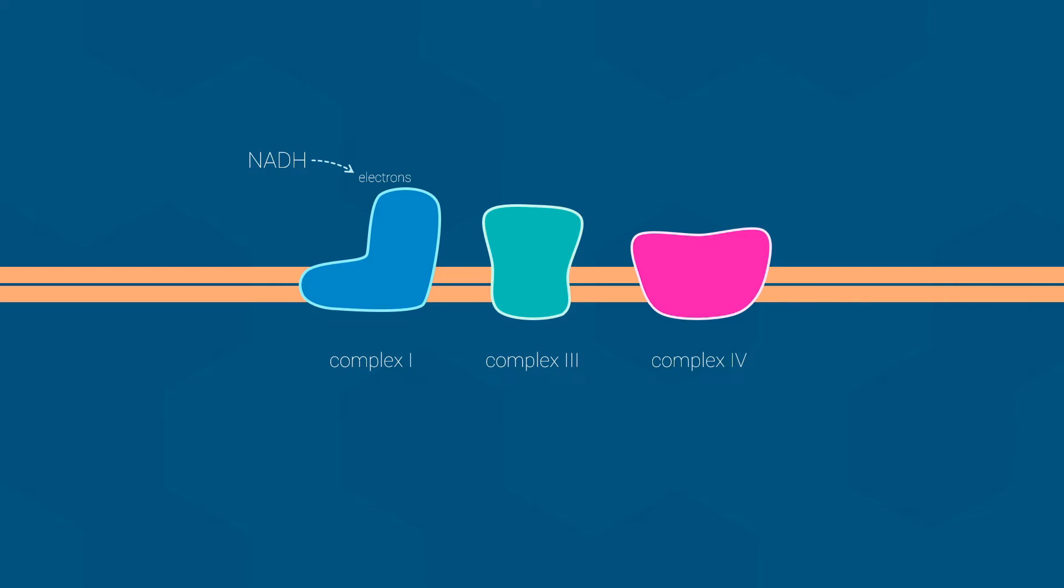The electrons from NADH enter the chain at complex 1, and then proceed to move down the chain to complex 4, where they reduce oxygen. Please note that this reaction is not balanced as shown. The electrons spontaneously flow from complex to complex because each protein in the chain has an increasing reduction potential, that is, becoming more positive. This means that electrons are decreasing in potential energy as they move down the chain, and energy is being released.